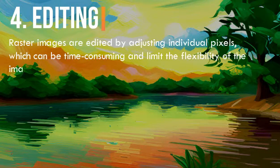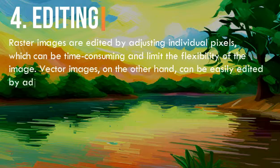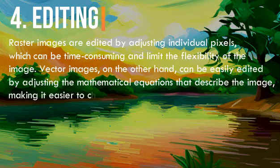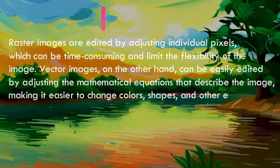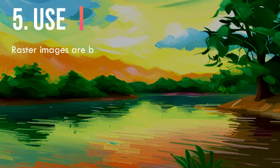4. Editing: Raster images are edited by adjusting individual pixels, which can be time-consuming and limit the flexibility of the image. Vector images, on the other hand, can be easily edited by adjusting the mathematical equations that describe the image, making it easier to change colors, shapes, and other elements.